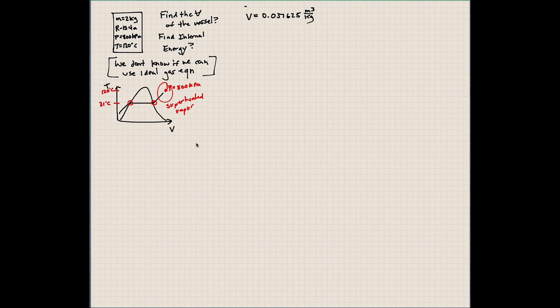Here's our specific volume. If we know the mass in this chamber, we can say that the volume is equal to the specific volume times mass. Our specific volume is here, and that's times 2 kilograms. So our volume of this chamber is 0.07525 meters cubed.